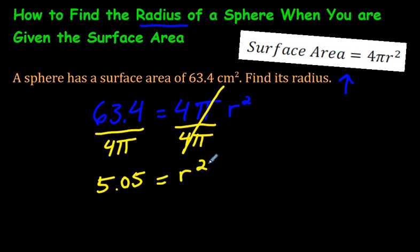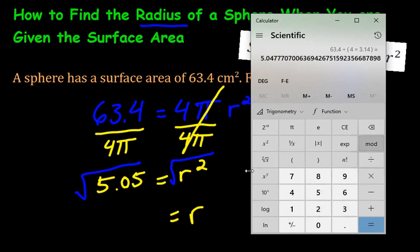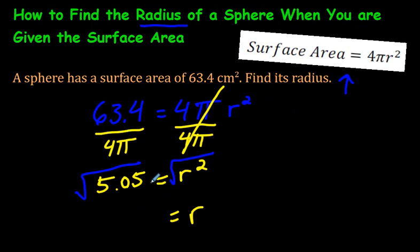Now, the way to get rid of the little squared symbol here is to do the opposite of squaring, which is square root. There is the square root symbol, and do the same thing on the other side, and that will leave us with r, and it equals whatever the square root of this is. So, 5.05, the square root of that, on my calculator, is 2.25. We have just found the radius, and the radius is 2.25.